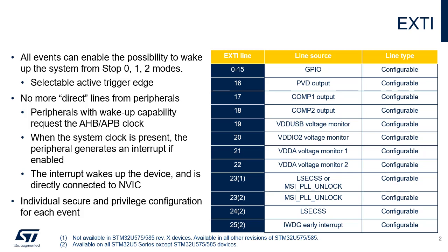Unlike previous versions of EXTI, the STM32U5 no longer supports direct peripheral events, which are generated by peripherals supporting interrupt requests. Peripherals with wake-up capability request the AHB APB clock, and when the system clock is present, the peripheral generates an interrupt if enabled. This interrupt wakes up the device and is directly connected to NVIC.